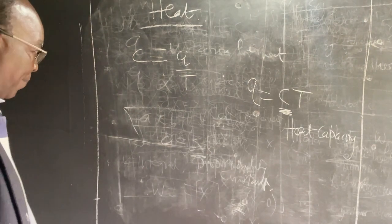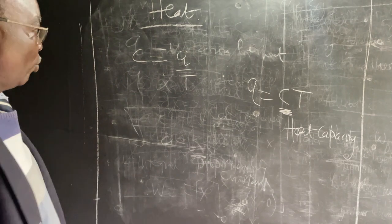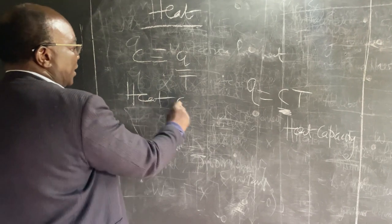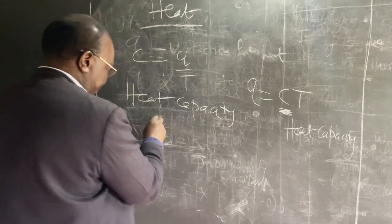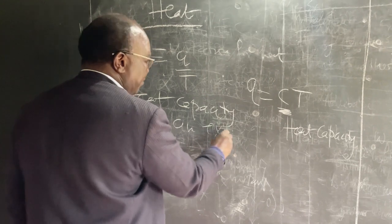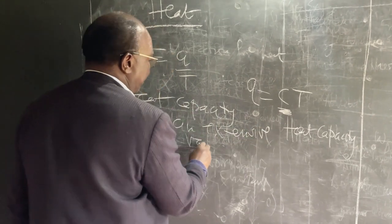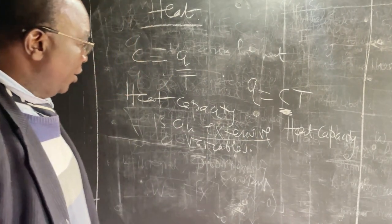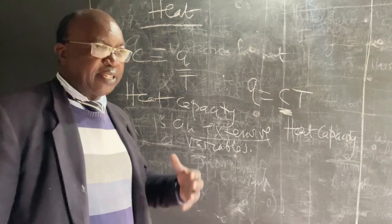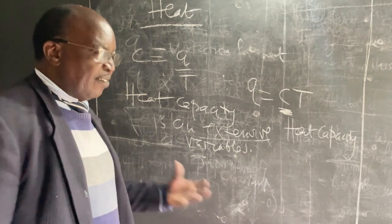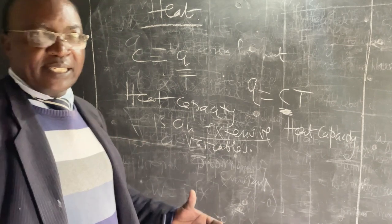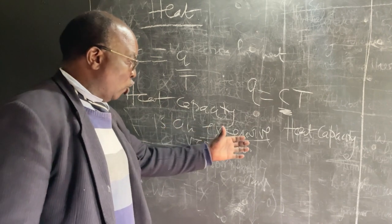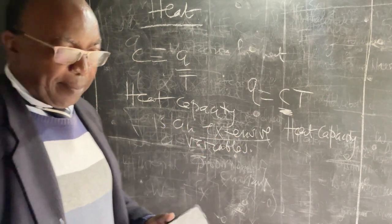That is heat capacity. Now, this quantity — heat capacity — is an extensive variable. That means it depends on the quantity, the amount of material. So if you have a whole drum of water you are trying to heat and you are monitoring the heat capacity, you will have to apply a lot of heat to change its temperature significantly. Heat capacity is an extensive variable — it depends on the amount of substance.